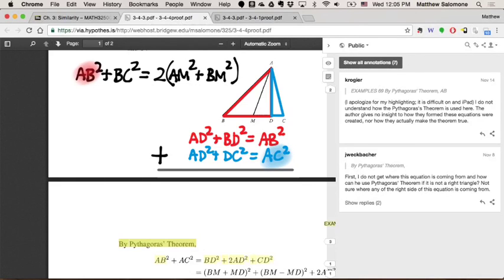AB squared plus AC squared, that's the right-hand side sum in these two equations, is equal to BD squared, which came from here, plus CD squared, which came from there, plus twice AD squared, which came from there.